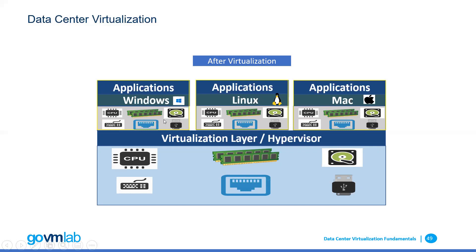On top of this virtual hardware, we are installing a general purpose operating system — Windows, Linux, or Mac — and then on top of that, we are installing the same applications we used to run on our traditional bare-metal Windows system. That's one of the major benefits of virtualization: you are able to run three different operating systems — Windows, Linux, Mac — simultaneously on a single hardware.